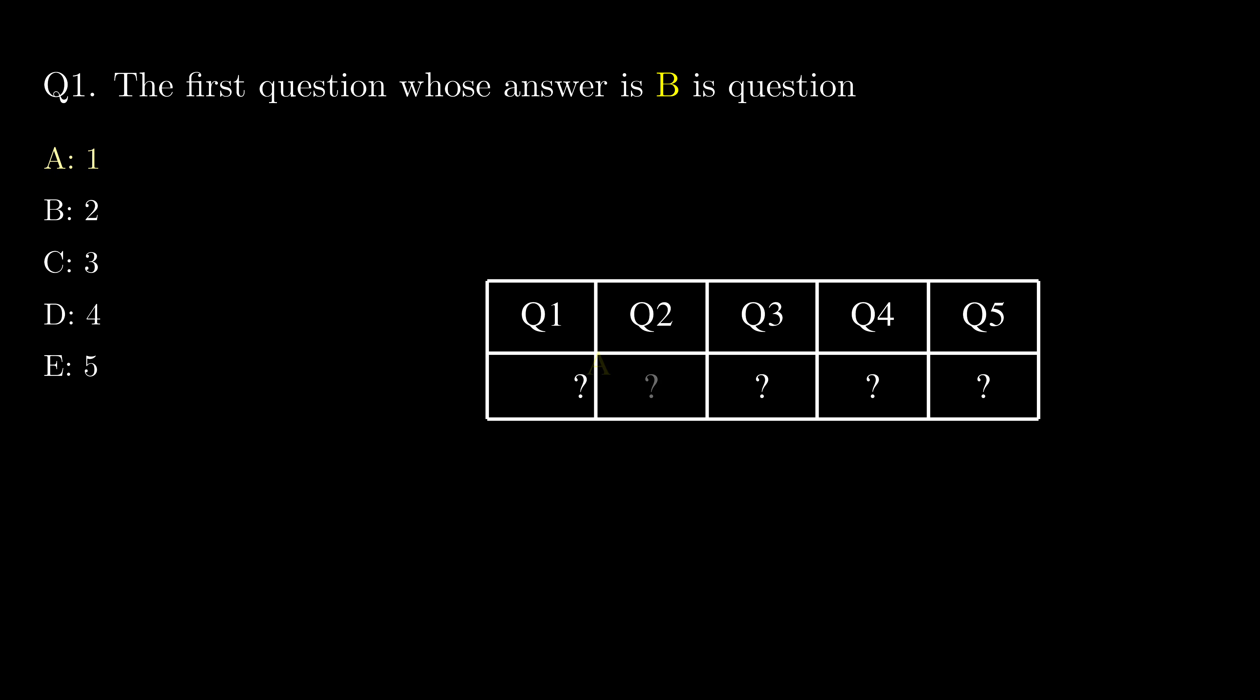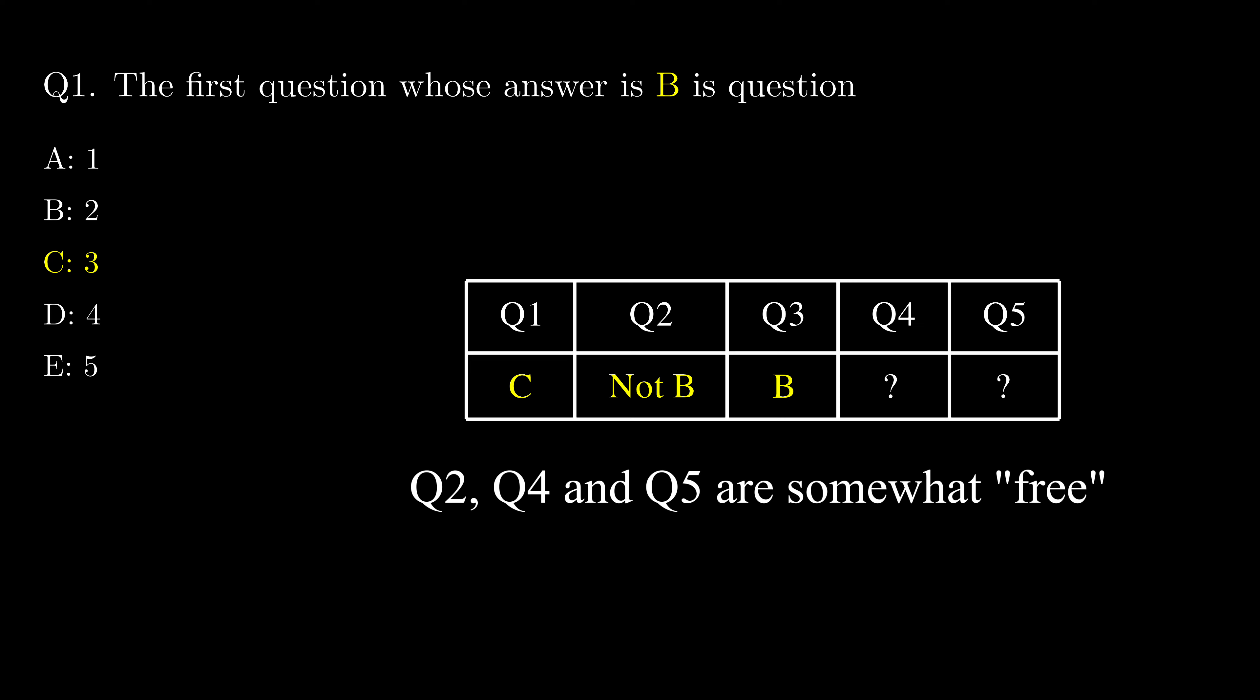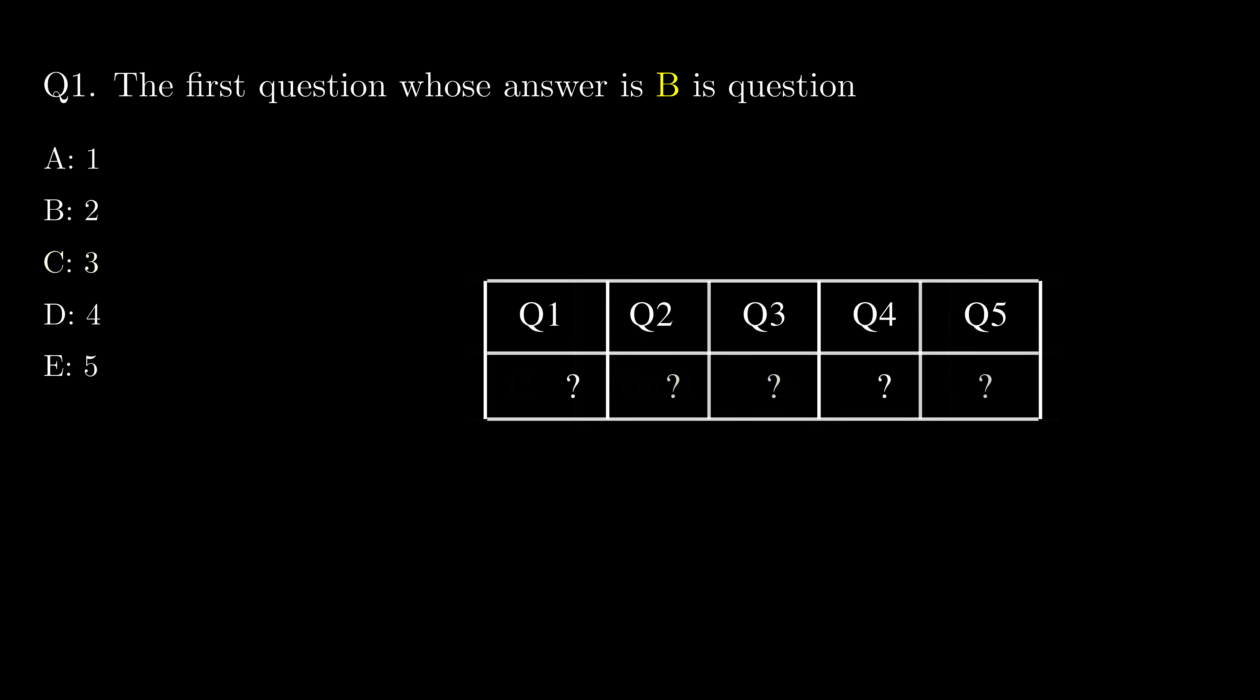It cannot be A, because if it is A it should be B. It cannot be B because if it's B it should be A. How about C? With information from only question one, we cannot reject the possibility that C is the answer. We can see the feasible domain for option C is somewhat a 3D structure in this 5D space, and a similar structure will emerge if we pick option D.